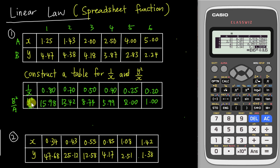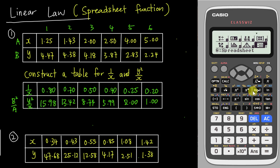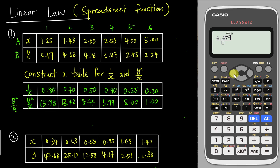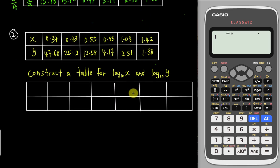This is how easily you can get all this data, especially when the x-axis or y-axis values are more complicated. You can verify it manually — for example, 4.47² divided by 1.25 gives you exactly the same value. You can trust the spreadsheet function to give very accurate answers.